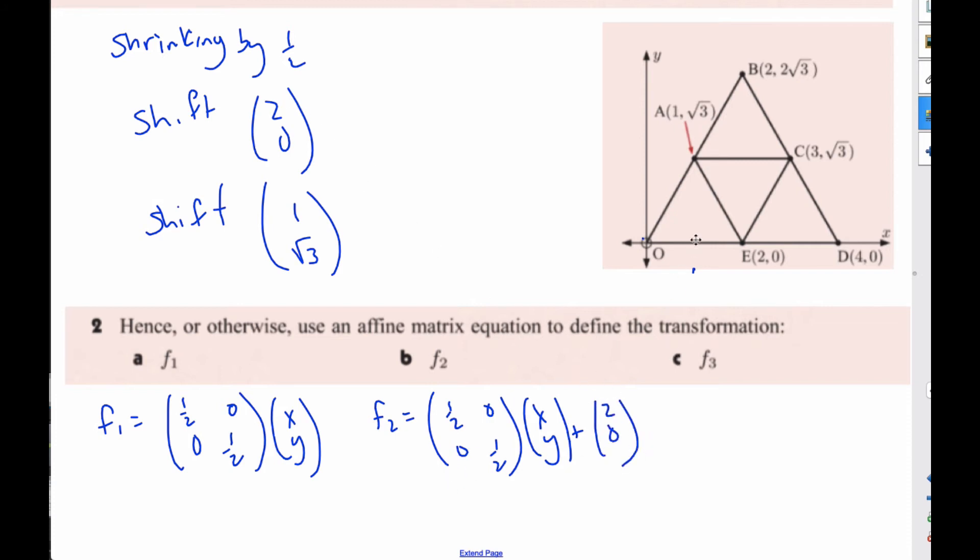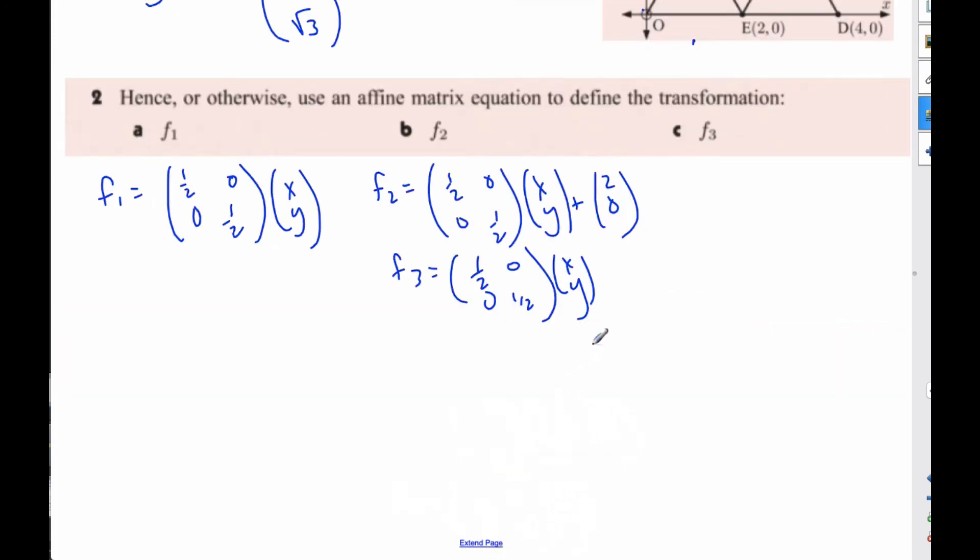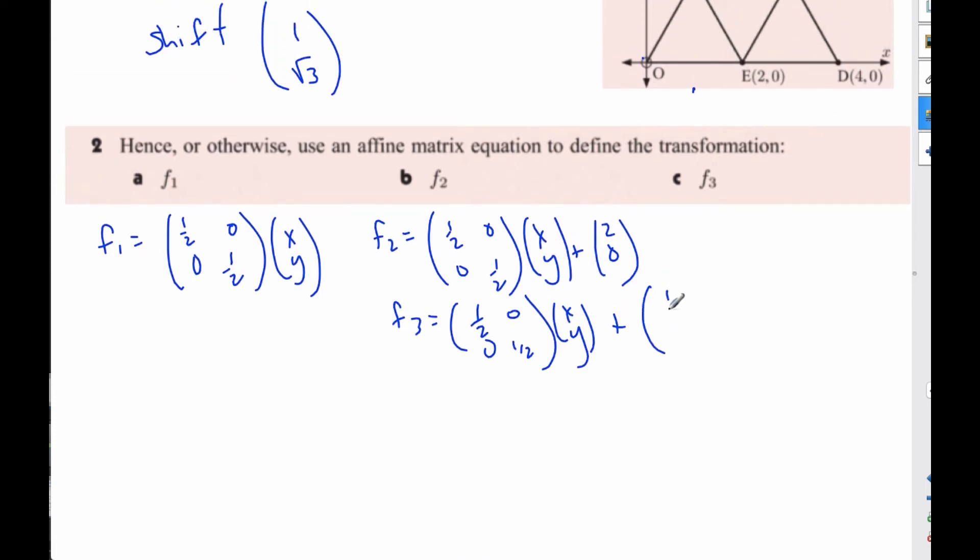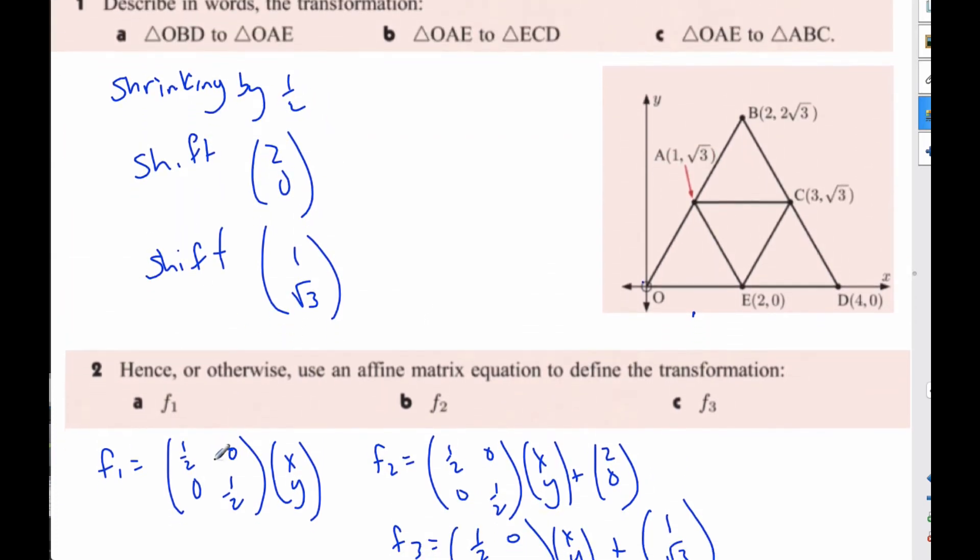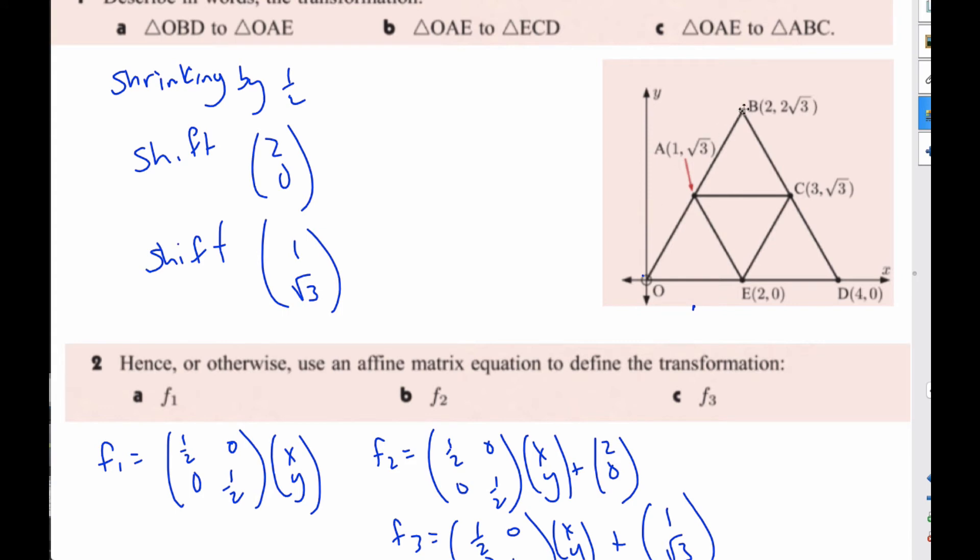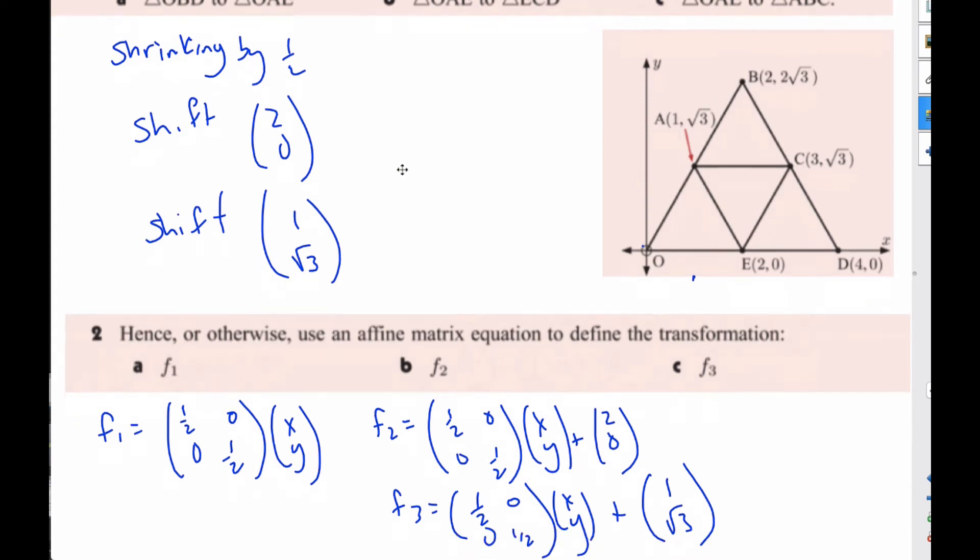And then finally, F3 will shrink it down and then shift it up and over one and √3. So if I go through this process of these three transformations continually, it will produce my Sierpinski's triangle.